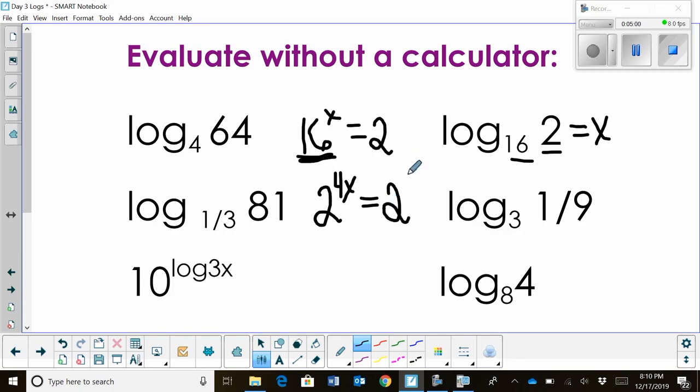Well, on this side, 2 is just to the first power. So I'm going to go ahead and write a 1 there. Well, once you have like bases, we know the exponents must be equal. So 4x equals 1. And so x must be 1/4. So in other words, the 4th root of 16 is 2. And that makes sense because 2 to the 4th power is 16. So the 4th root of 16 would then equal 2.